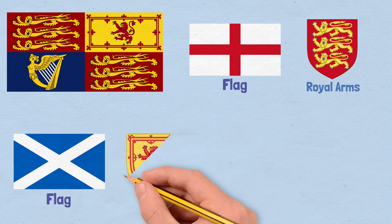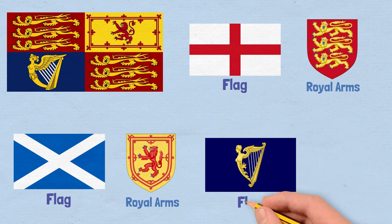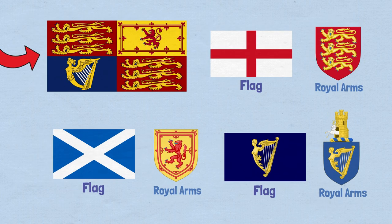The second quadrant represents Scotland, as well as its past incarnation as the Kingdom of Scotland. The third quadrant shows the banner of arms of the former Kingdom of Ireland, although nowadays it is assumed to symbolize Northern Ireland.